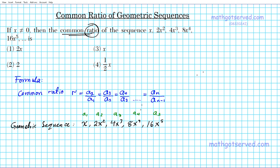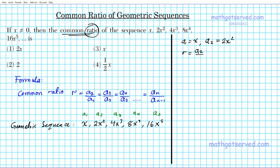We're going to pick the first two terms to find the common ratio, then pick another pair to check the accuracy of our answer. Using a1 and a2: a1 is x and a2 is 2x squared. The common ratio is the second term divided by the first term, so we have 2x squared divided by x.